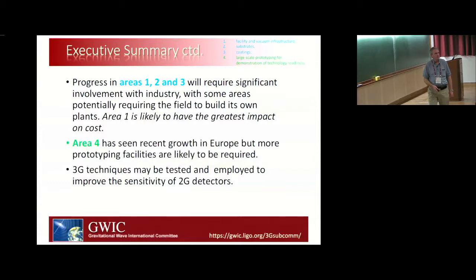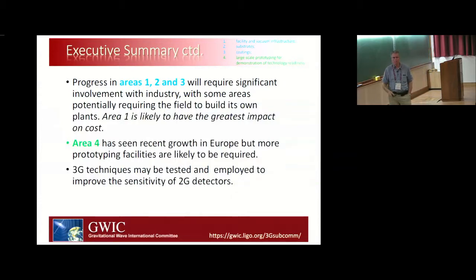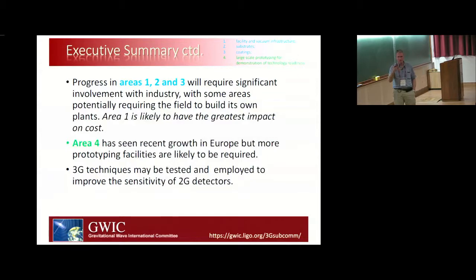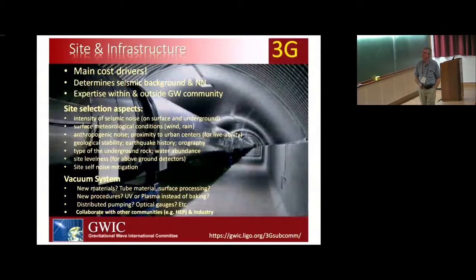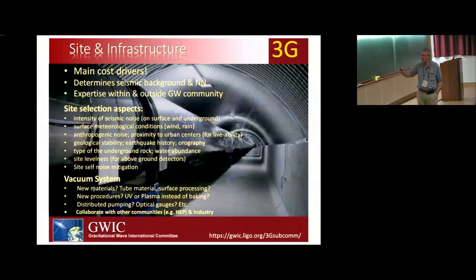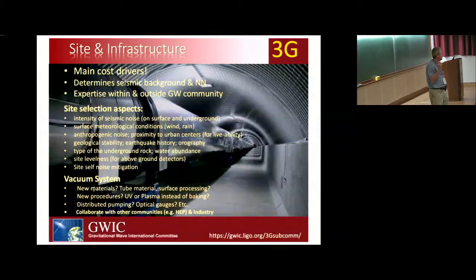Area four — prototype facilities — has received a recent boost in Europe through the Einstein Telescope investments happening in Sardinia. Three-G techniques can also be applied back to improve sensitivity of 2G detectors: Advanced LIGO is already using squeezing that wasn't in the initial baseline. If you're looking at building an R&D community in India, there's a lot in this collection to focus on. The main cost drivers start with site infrastructure — you need to determine a site has really low seismic and Newtonian noise background, and you need to reach outside the community for that.